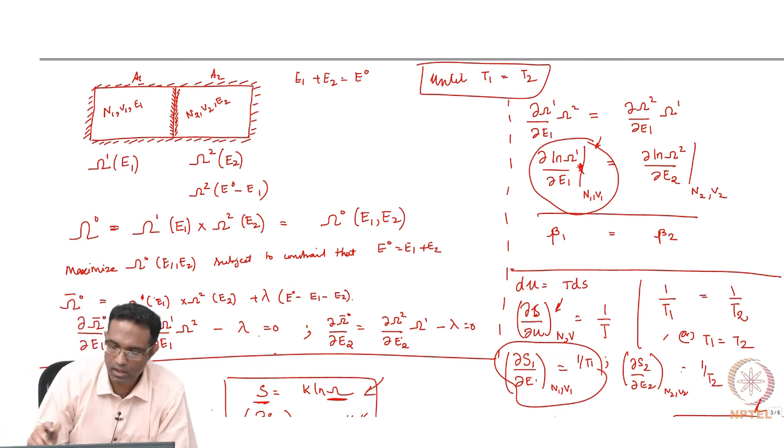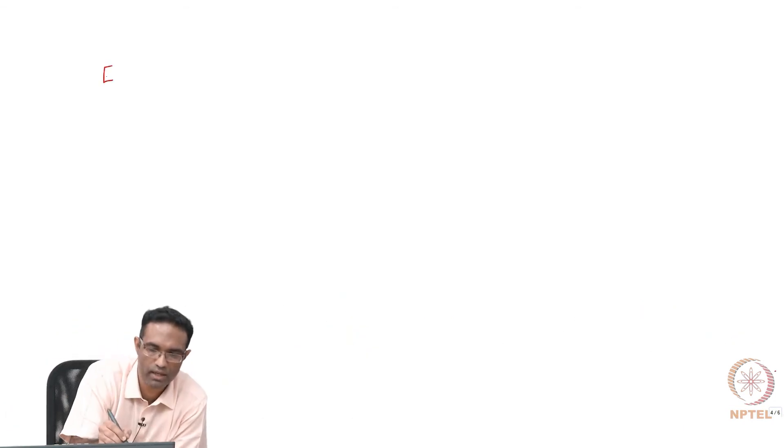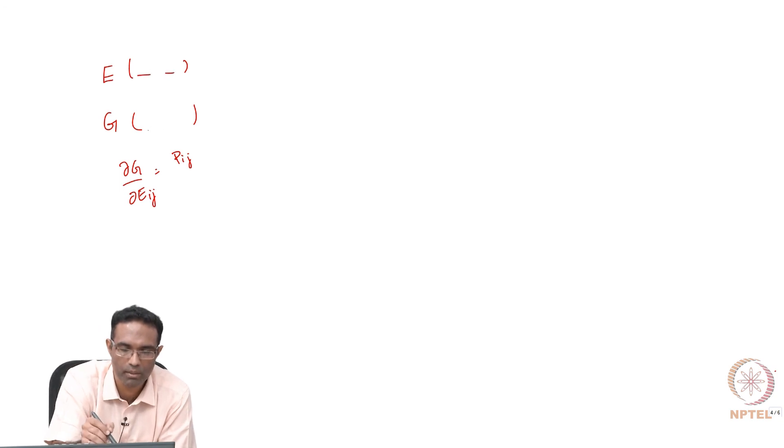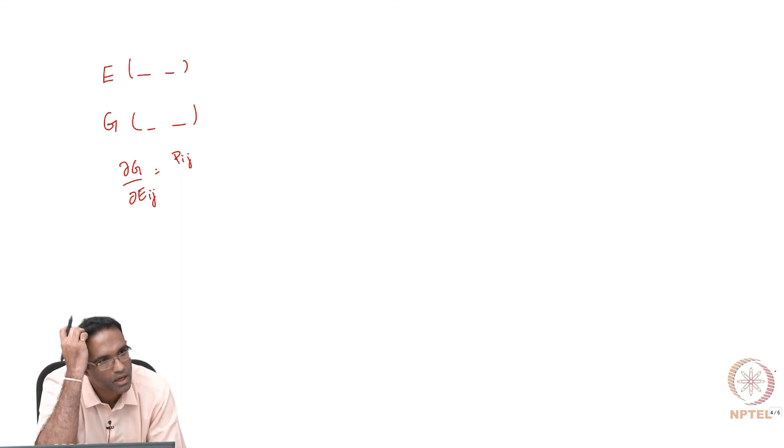If you are able to represent say strain in terms of microscopic quantities and you are able to represent the Gibbs free energy in terms of these microscopic quantities or the number of complexions, then dou g by dou e strain will give you some stress. We will see later that all these things that come here, how strain or Gibbs free energy is represented in terms of the microscopic quantities, will be in terms of the positions and the velocities of all the atoms that the system is comprised of.